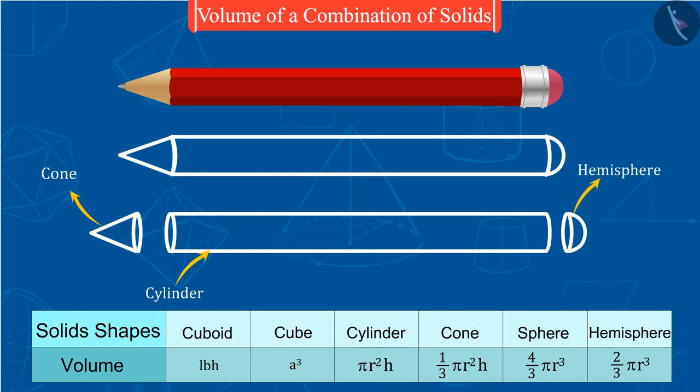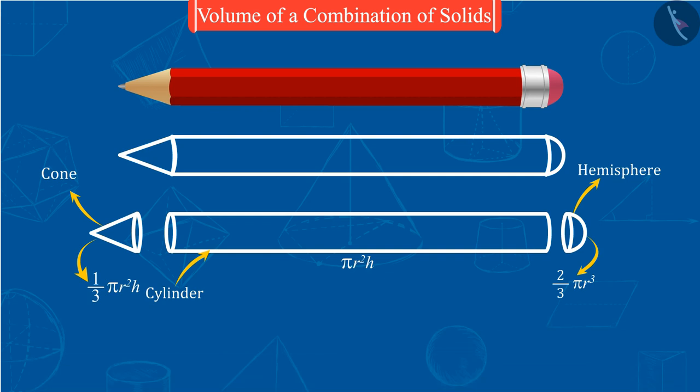Can you see that this pencil is made by the combination of a cone, a cylinder, and a hemisphere? Hence to find the volume of this pencil we have to add the volumes of these three basic figures. Let these be the measurements of this pencil. Let us now find out the volume of these figures one by one.